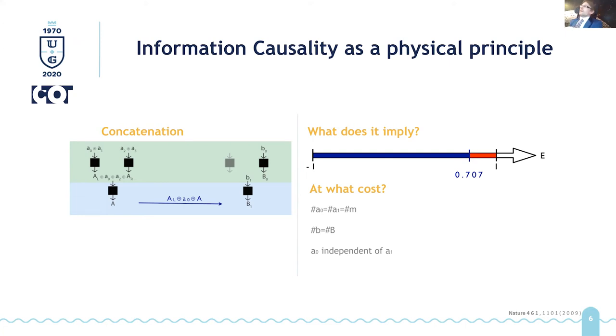But then I can use another layer of the protocol, which is exactly the same as the previous one, and then encode these two messages into one message. So I get four numbers encoded into a single bit message. Now it forbids even more non-local boxes. And if you repeat concatenation many, many, many times, in the limit of infinity, you get the quantum bound. And this made us very, very happy.